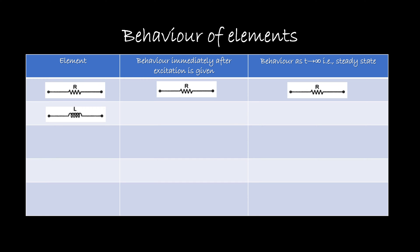The next element is the inductor. What is the property of inductor? The inductor does not allow sudden changes in current. In this case, the inductor was initially uncharged, so the current is zero. When it is excited immediately, the behavior immediately after the excitation is that it won't allow the current — that is why it behaves like an open circuit. For a long time, as t tends to infinity, the inductor will allow the current, so it will behave like a short circuit.